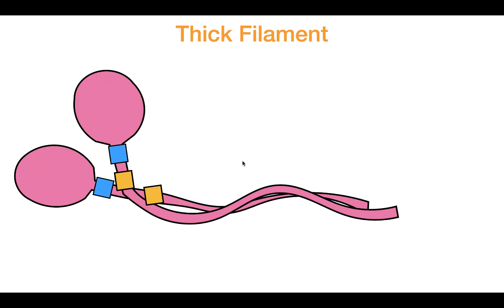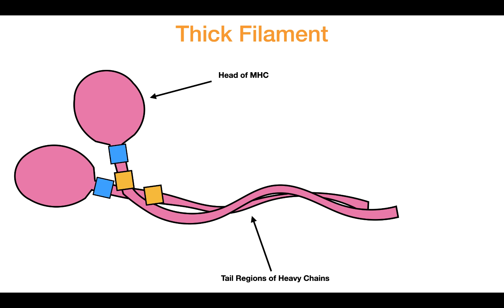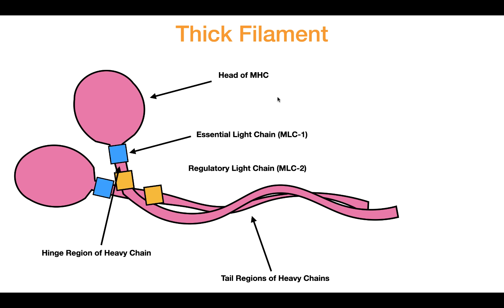Just as a reminder, this is the thick filament and this is the myosin. The first part of myosin is going to be the head, where the ATPase activity is — and ATPase activity is required for contraction. The next part is going to be the tail regions of the heavy chains, then the hinge region, and the other two regions are going to be the light chains, one of which is the regulatory light chain.